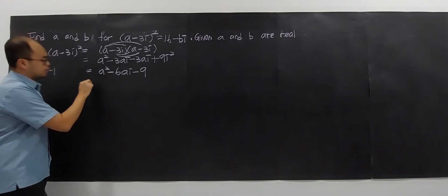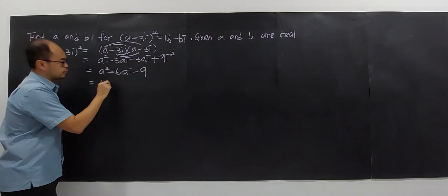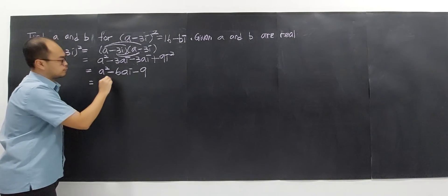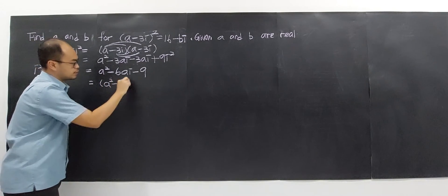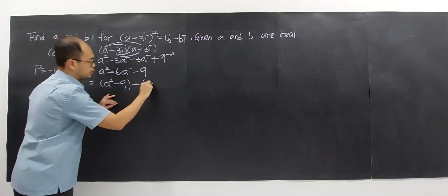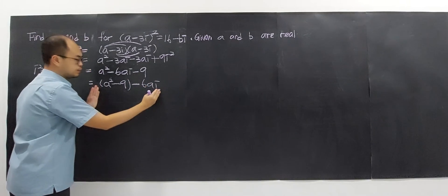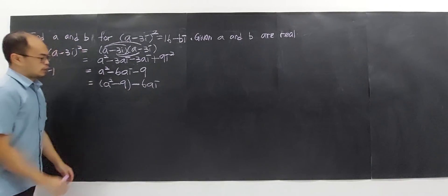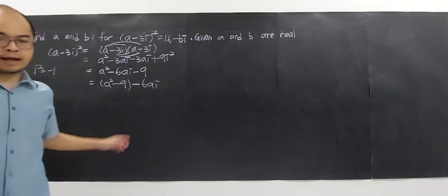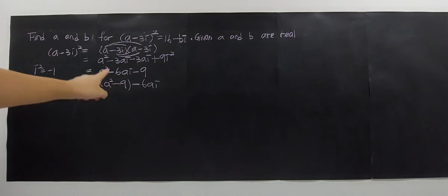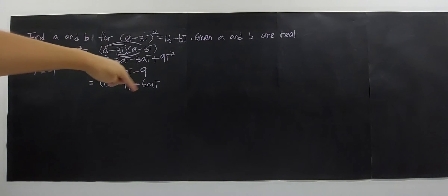I will group the result in the form A plus Bi. So the real part will be A squared minus 9, and the imaginary part will be negative 6a. This is a complex number with both a real and imaginary part. So now I have this for my left hand side.